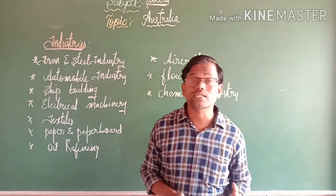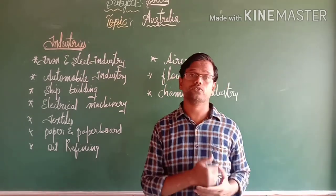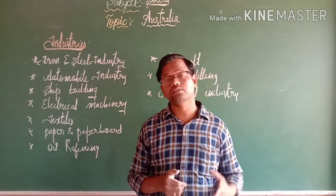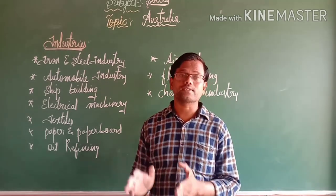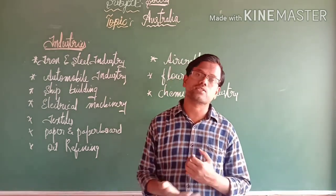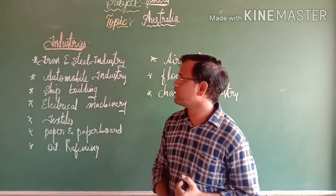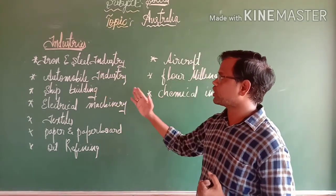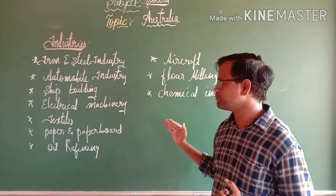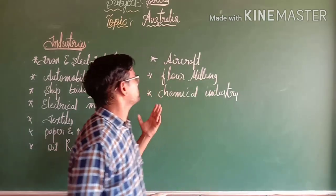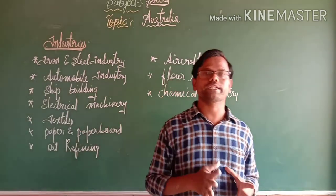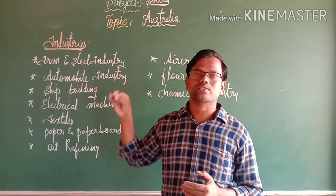Australia has many industries, as it is well developed in agriculture, minerals, science, and technology. The important industries include iron and steel, automobile, shipbuilding, electrical machinery, textiles, paper and paperboard, oil refining, aircraft, flour milling, and chemical industry.